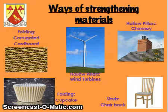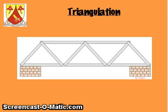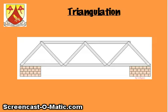Then we move on to something called triangulation — you can see and hear the word triangle in it. Remember frame structures have different functions: they hold things up, give a certain shape, or bridge a gap between two places. Struts help to make these frame structures strong, rigid, and stable. Stable means it's not going to go anywhere; rigid means it's not going to collapse. Triangulation means struts can be joined into triangular shapes to make a strong, stable shape.